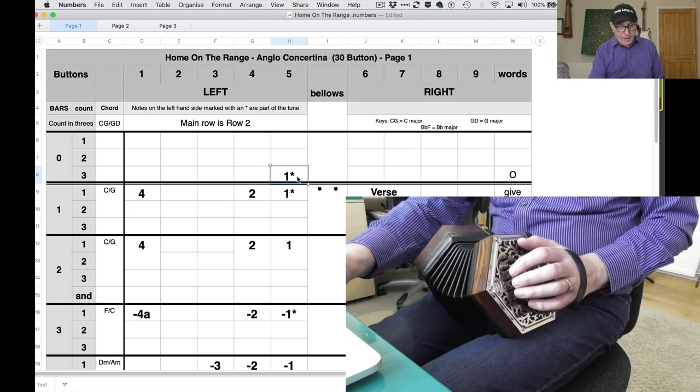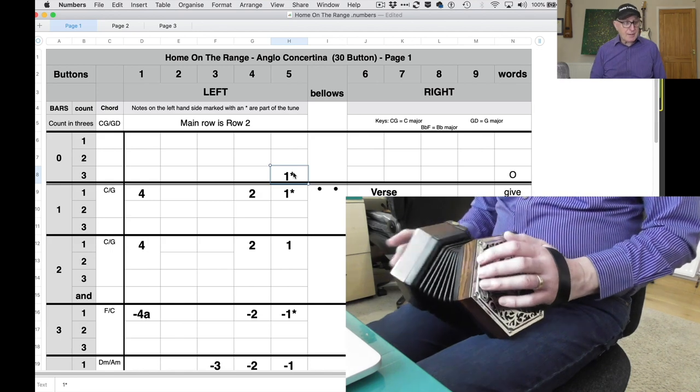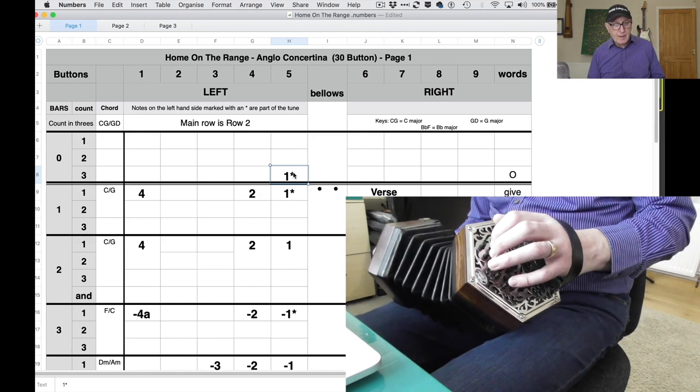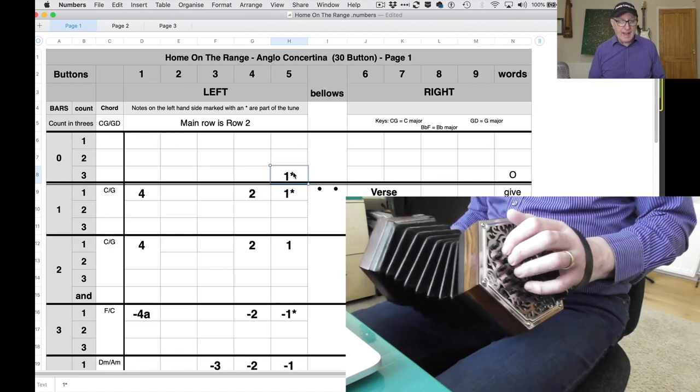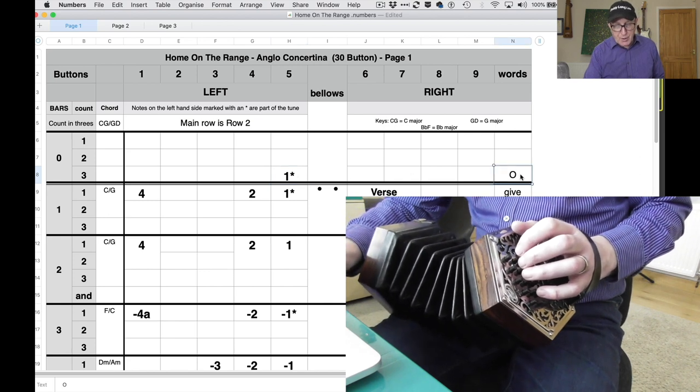So this is the middle row, the main row, button five, finger one. And we know it's part of the tune because it has an asterisk. So pull your bellows out before you start and count one, two, and play that note on beat three. And you've got your first note of the tune, which corresponds with the word 'oh.'